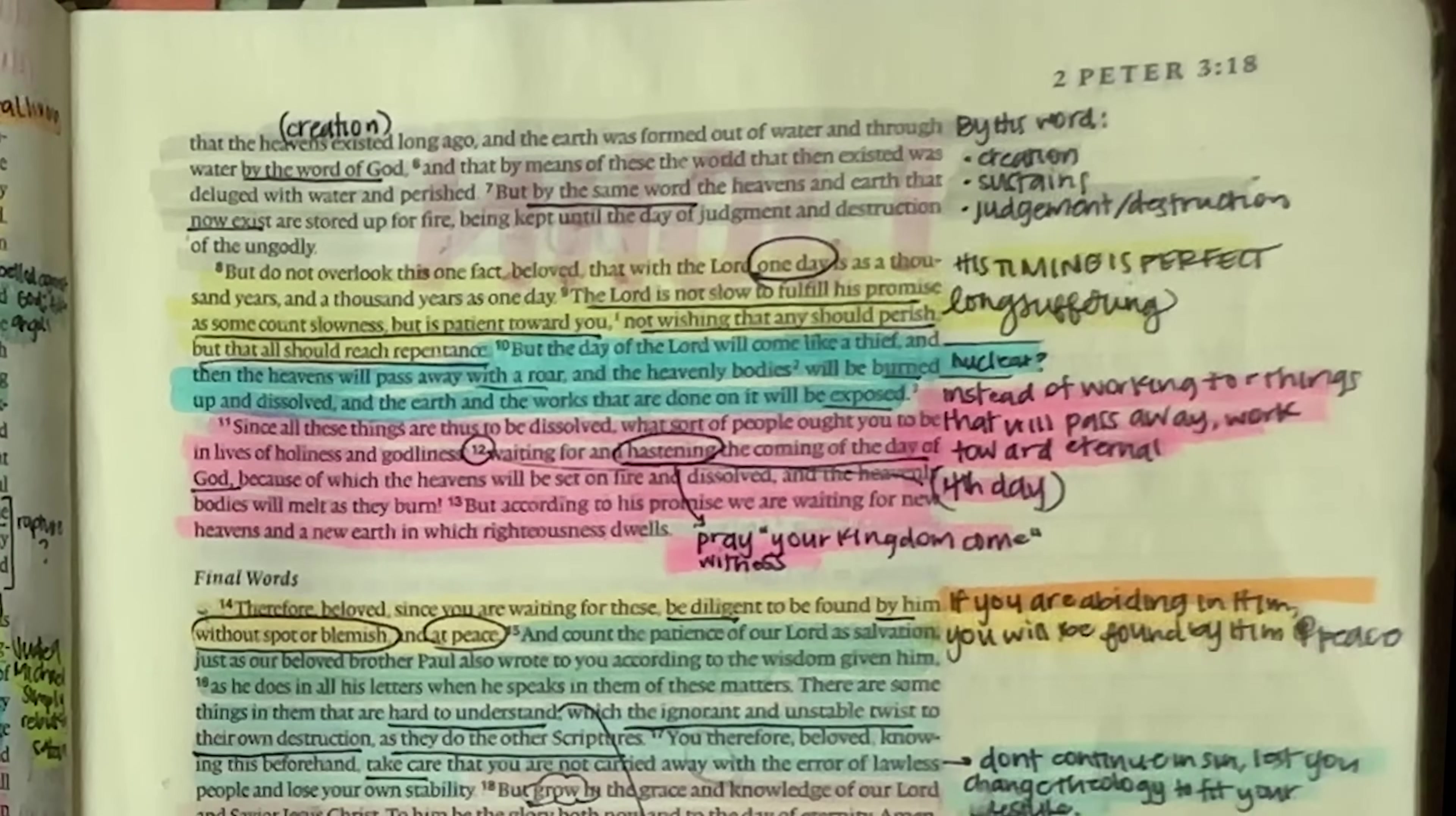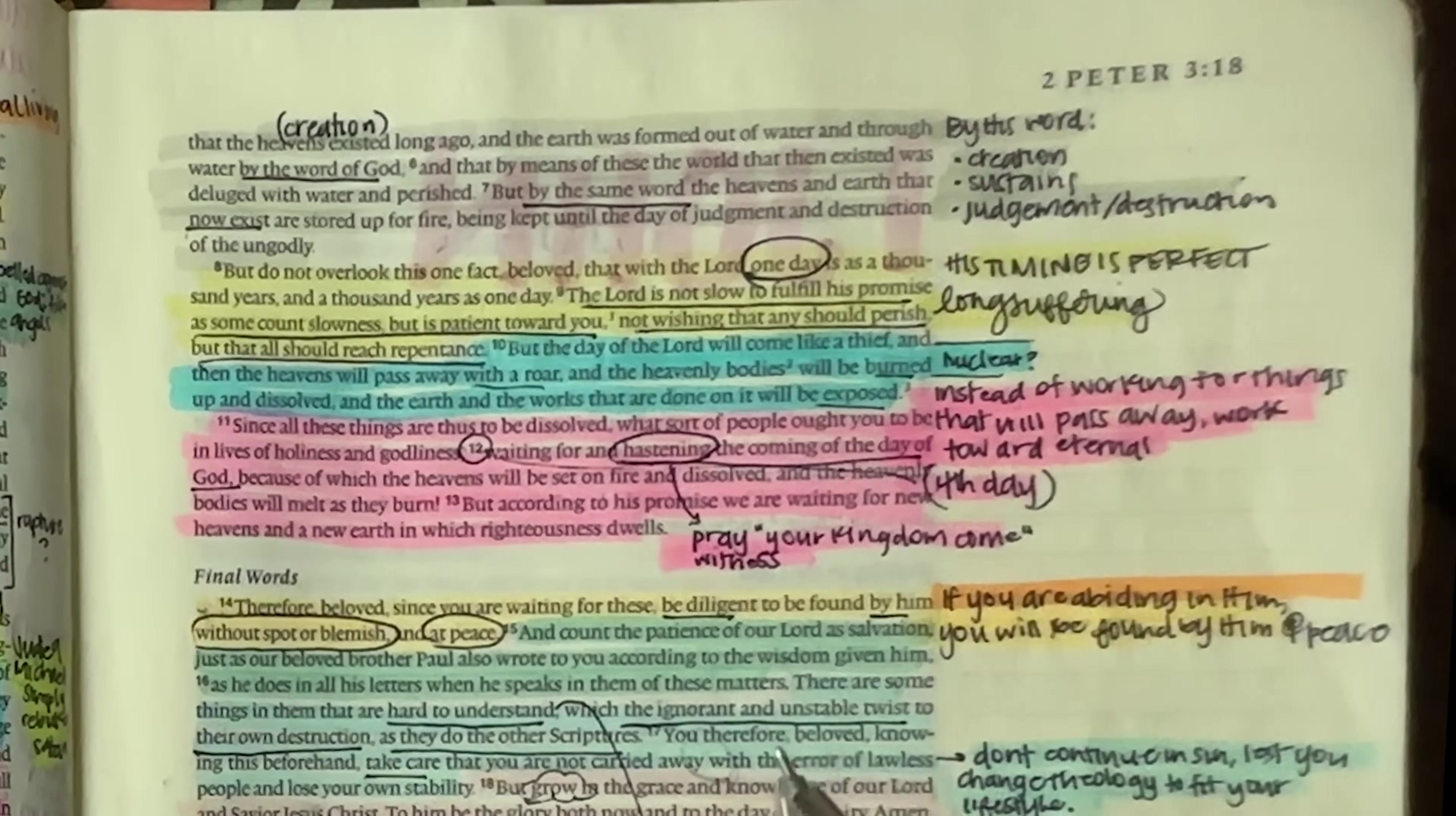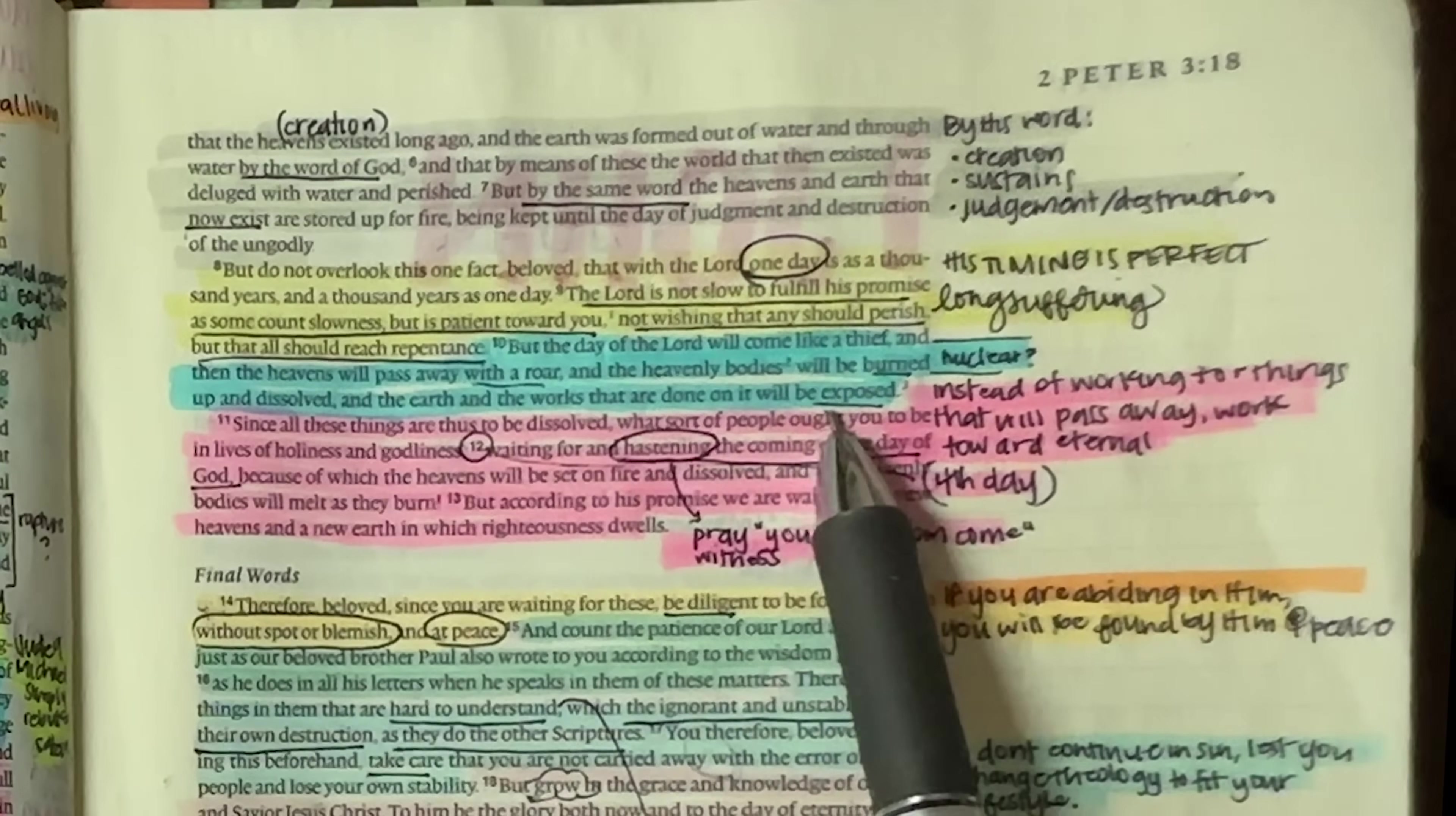And he has so much mercy and so much grace and his patience is long suffering, meaning he's going to wait a very long time. But once he finally puts that hammer down, he's done waiting, right? So he is not slow to fulfill the promise, but he's just waiting, giving us a chance to be able to come to repentance because he wants everyone to do so. But the day of the Lord will come like a thief, especially for the unbelievers. And then the heavens will pass away with a roar and the heavenly bodies will be burned up and dissolved and the earth and the works that are done on it will be exposed.